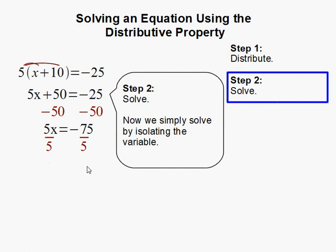Then we divide by 5 on both sides of the equal sign. And that gets us x by itself and x is equal to negative 15.